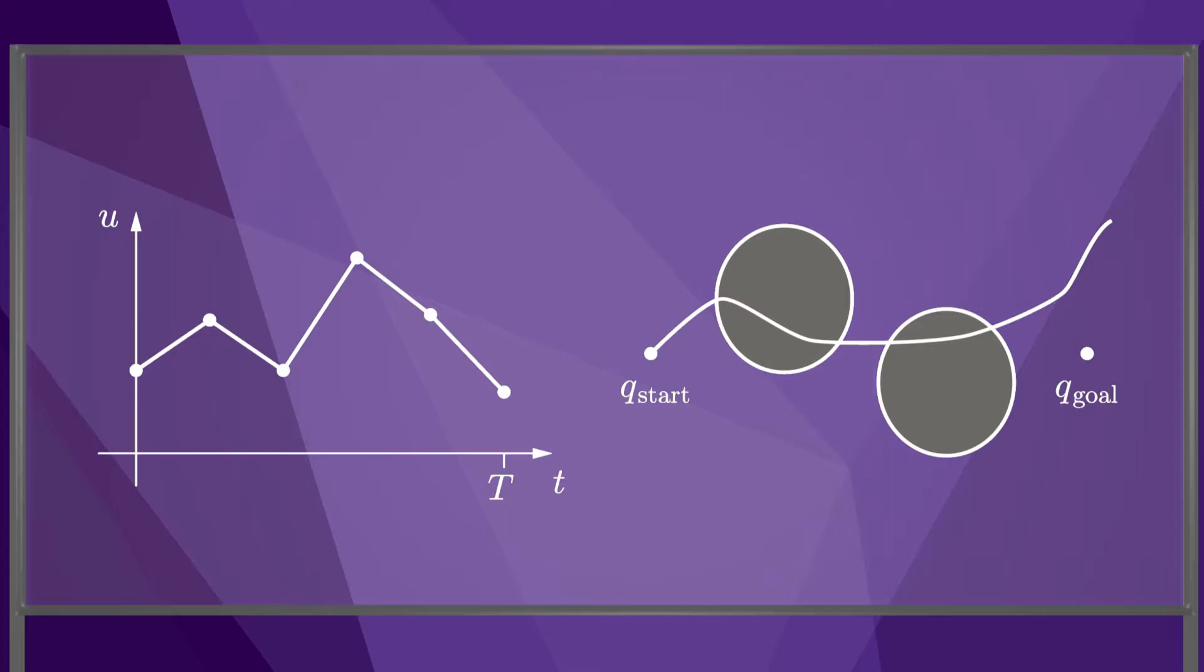To evaluate the constraints on the motion due to obstacles, we can choose a finite set of test points along the trajectory and evaluate whether those points are collision-free. The collision constraints can be expressed as constraints on the distances between the test points and the obstacles, where a positive distance means that there is no collision, and a negative distance implies a collision.